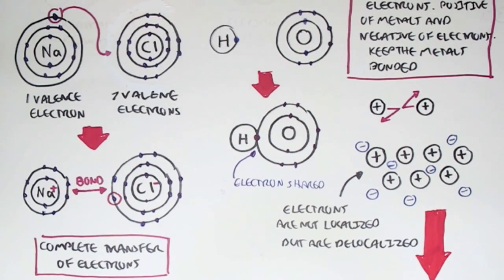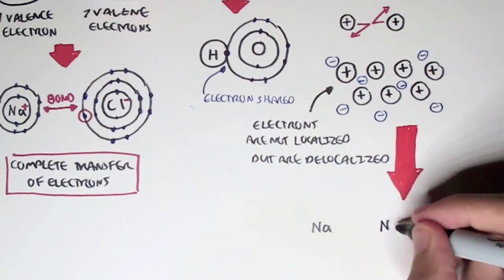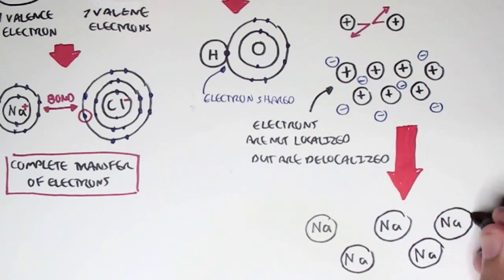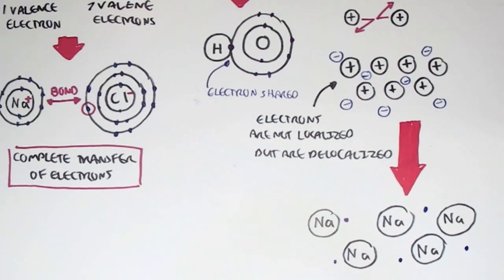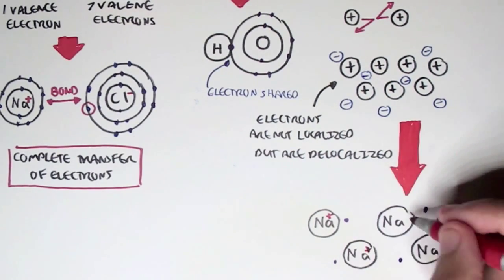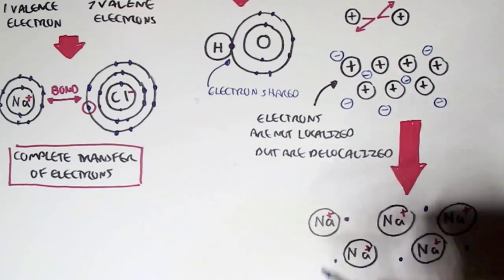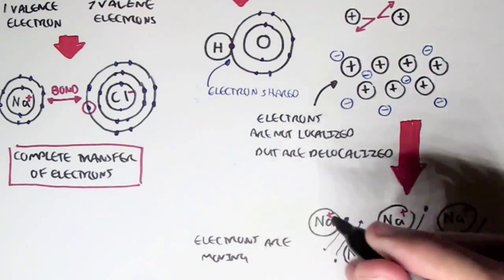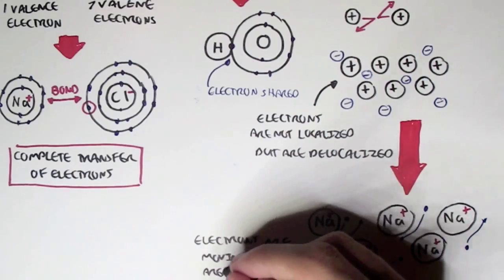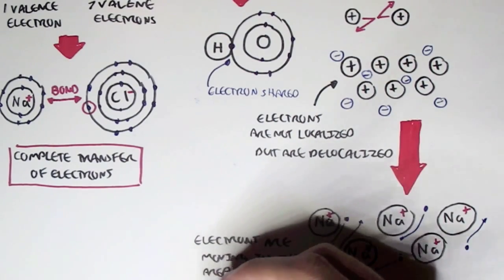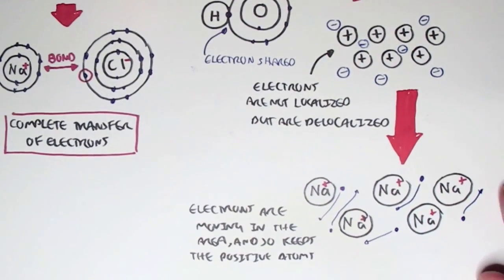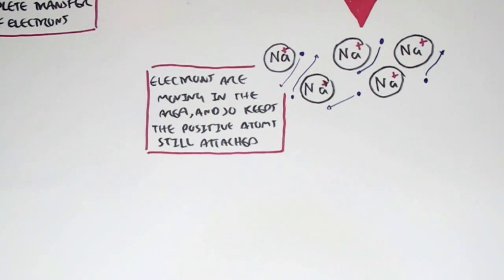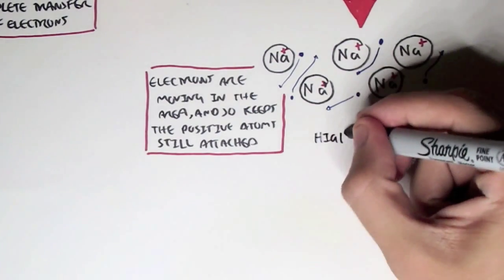For example, sodium has one valence electron. As this electron moves around, it causes sodium to become partially positive, creating cations. These electrons move through the area, and this sea of electrons keeps the positively charged sodium atoms attached together, making the structure relatively stable due to metallic bonding.